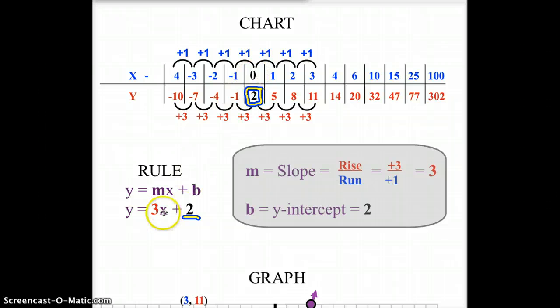0. Plug in 0 for here. 0 times 3 is 0. 0 plus 2 is 2. That goes right here. And so on and so forth. You keep plugging in the numbers. You can solve for all of these y points. You want to check it out? Well, try 100, for example. 100 times 3 is 300. 300 plus 2 is 302, as listed right there.